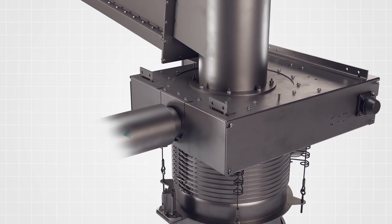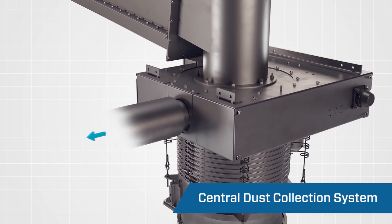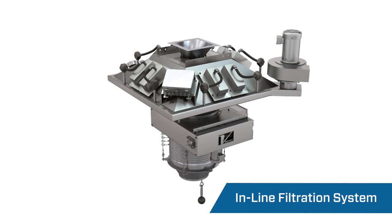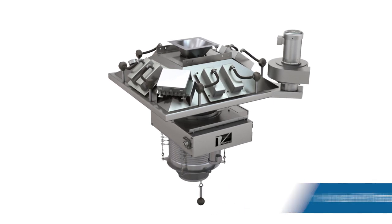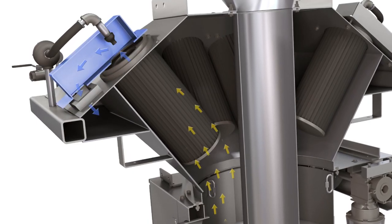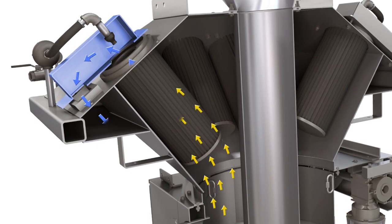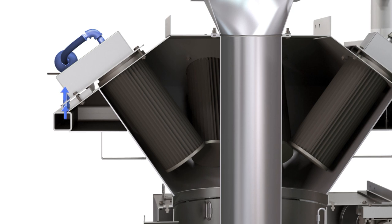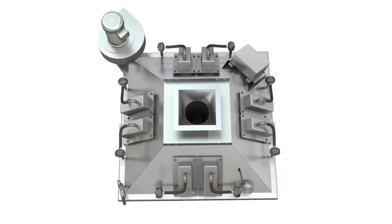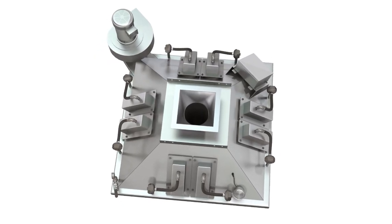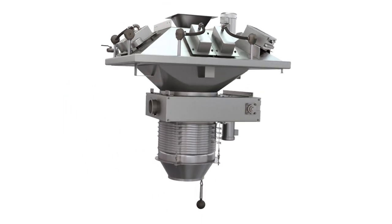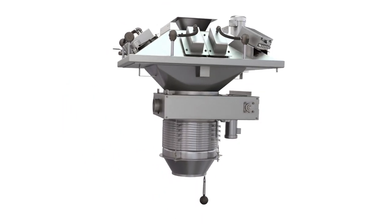In this example, a central dust collection system is used, but as an alternative, a Vortex in-line filtration system could be placed above the spout. Unlike central dust collectors, the Vortex in-line filtration system reintroduces captured dusts back into the load rather than disposing of them as waste. Its compact design is low-profile to reduce the overall stack-up height, which is especially important at loading stations where available space is limited.